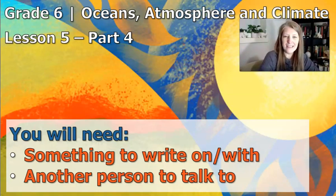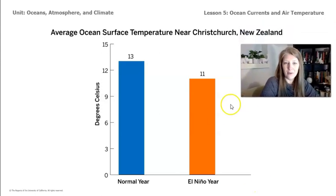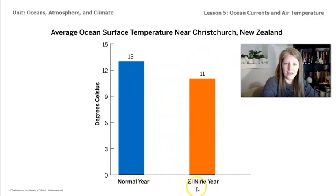Let's start this last part of the lesson by looking one more time at this graph that we've seen a couple times. What this graph is telling us is the average ocean surface temperature near Christchurch, New Zealand. We can see two bars here — one showing the ocean surface temperature in a normal year, and the other showing the ocean surface temperature during an El Niño year.